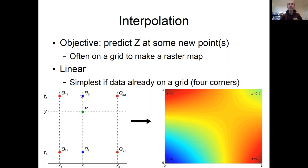The simplest way of interpolation is just linear interpolation. It works particularly well if your data is already on a grid—you're just interpolating linearly between two points.